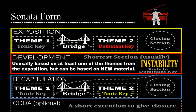Sonata form is similar to ternary form as its overall pattern is A, B, A'. However, sonata form has a two-part structure. Section A forms the first half, and B and A' form the second half.